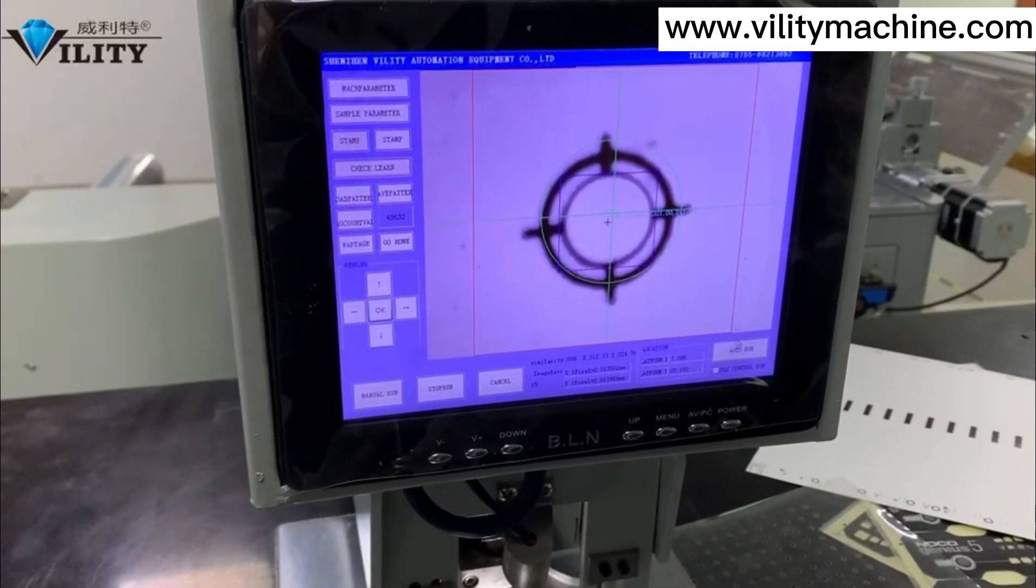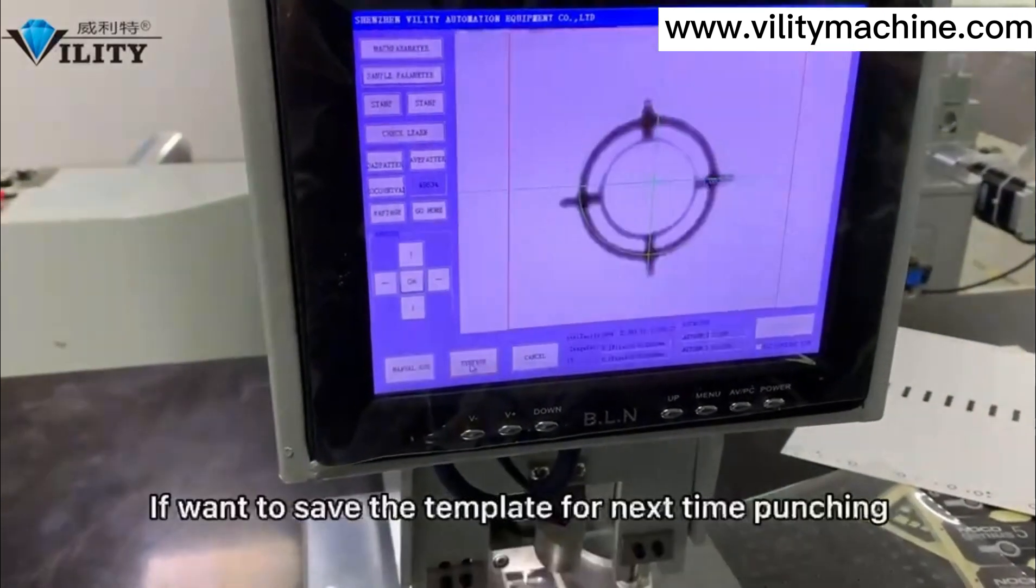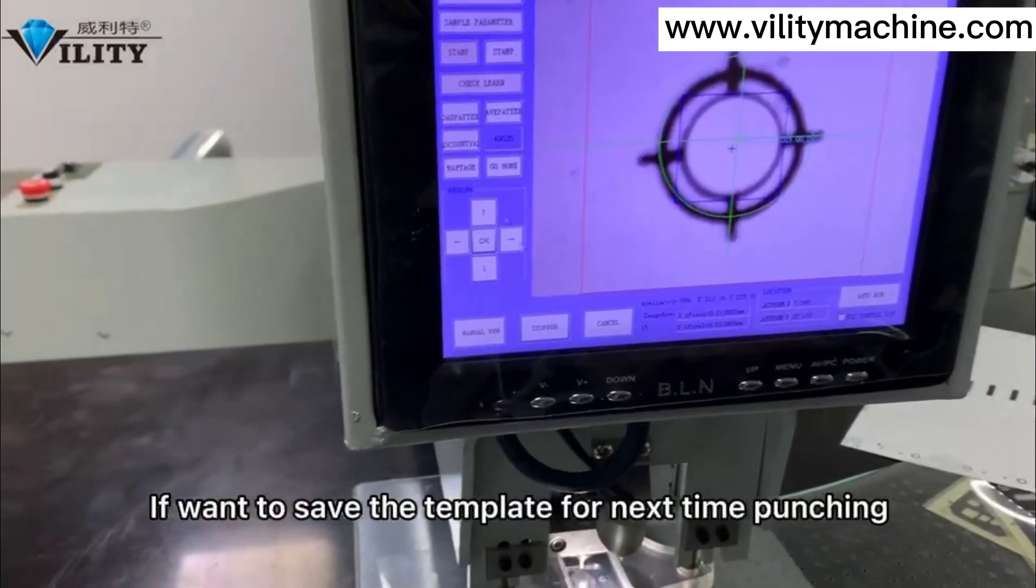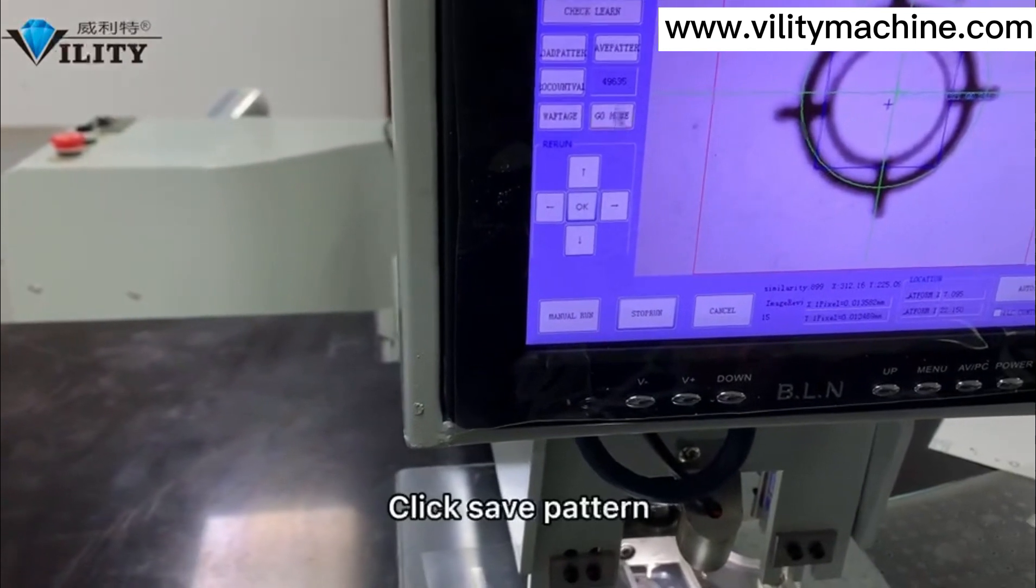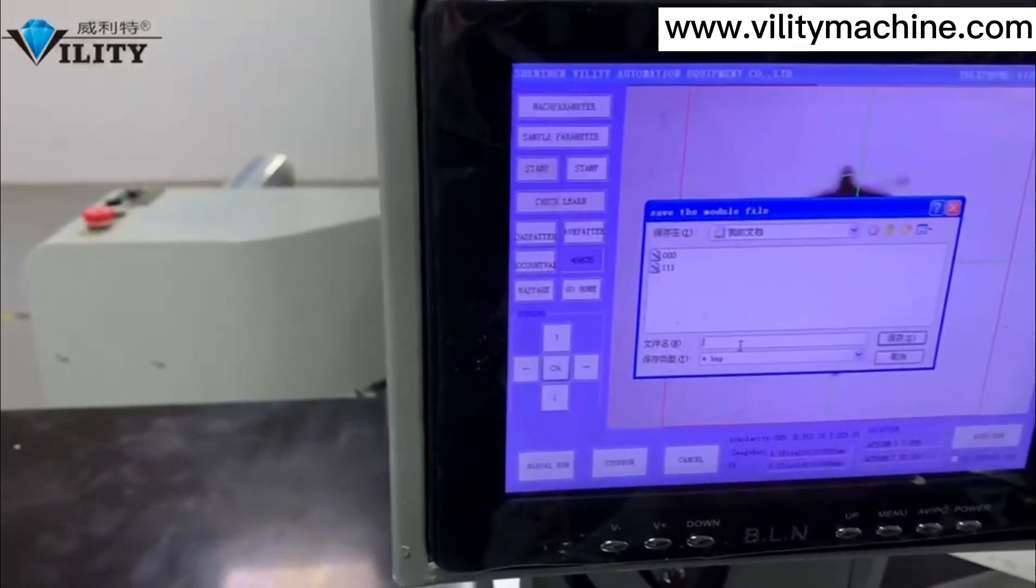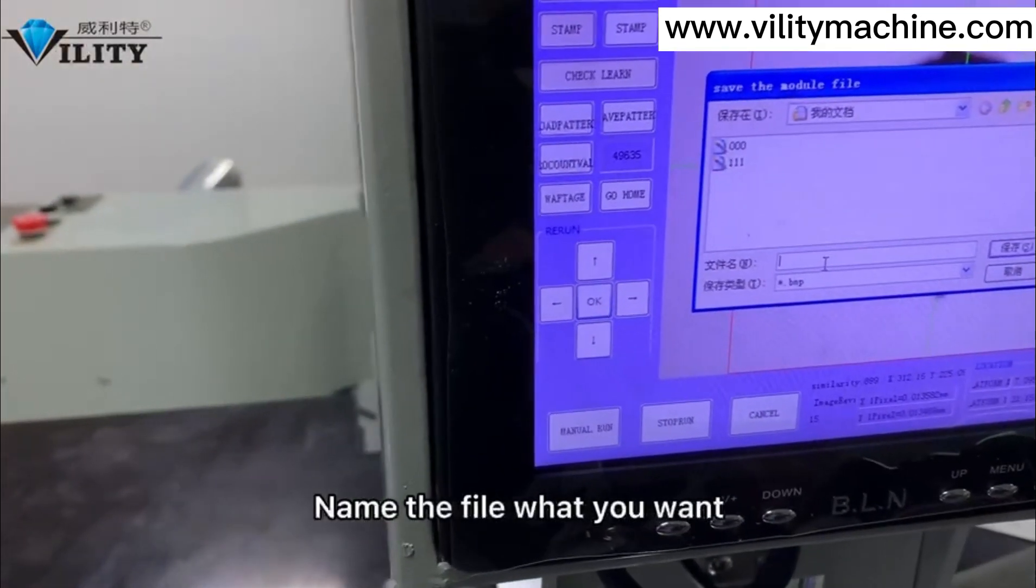Click check length, then click order one. If you want to save the template for next time punching, click save pattern and name the file what you want.